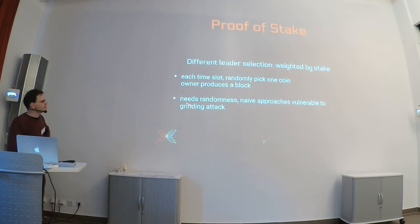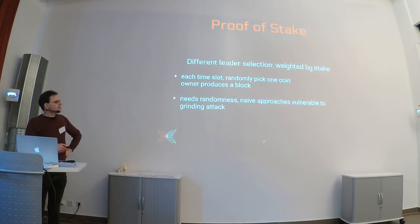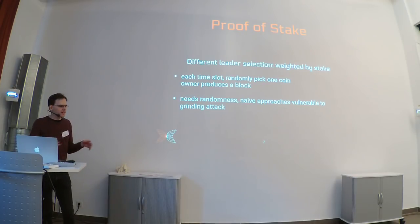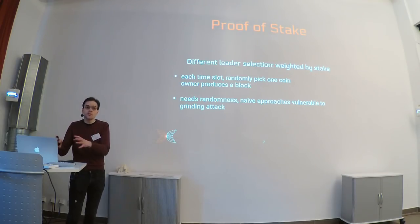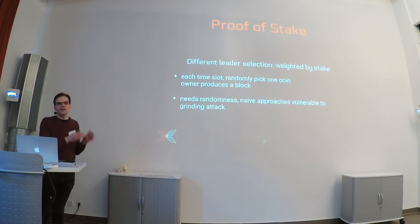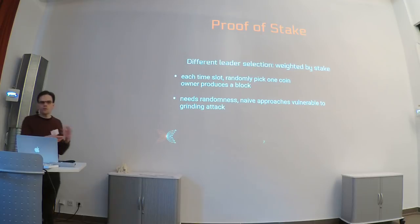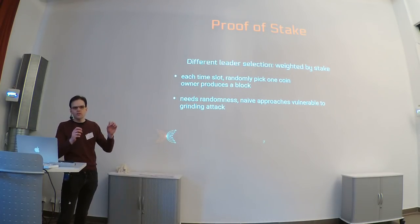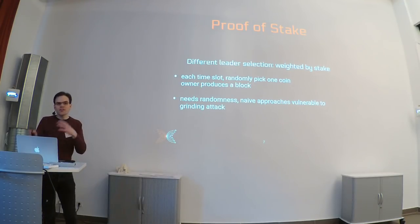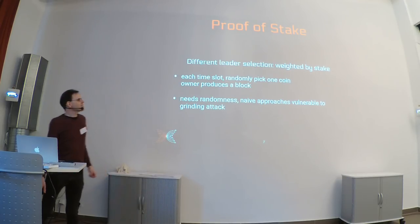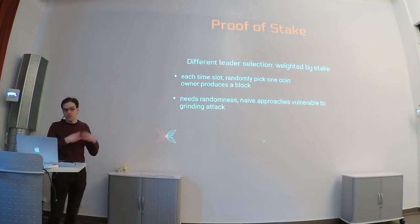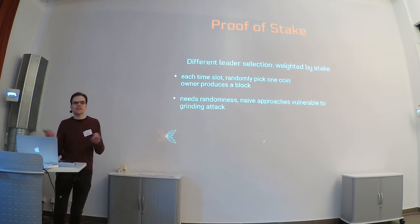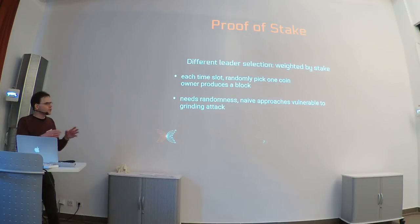One thing that long prevented proof of stake from working is the source of randomness. In proof of work, randomness is implicit — it's just the real-world race. But in proof of stake you need to explicitly and randomly pick a coin in the protocol, and everybody must agree on the random number generator. If you agree on a seed in advance, people could shift coins via transactions to predict which coin gets elected and manipulate their holdings to increase their chances of election.